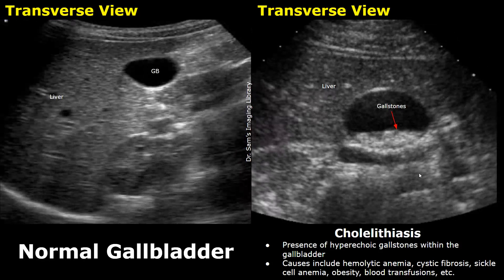This is a transverse view of the normal gallbladder. Here is a transverse view showing gallstones — hyperechoic stones are seen within the gallbladder.